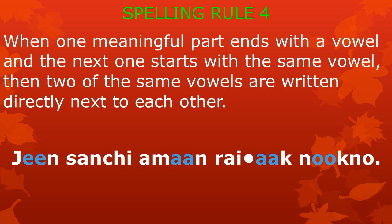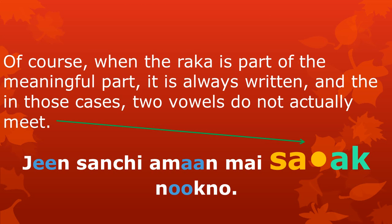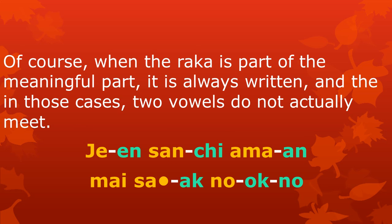The fourth spelling rule is this: when one meaningful part ends with a vowel and the next one starts with the same vowel, then two of the same vowels are written directly next to each other. We can analyse the words in a sentence with the dll shown in gold colour and the sok in green colour. Of course, when the raqa is part of the meaningful part, it is always written, and in those cases the two vowels do not actually meet — for example, in the word sa'aq. In the analysis, we can see that the raqa is part of the ca'dil of the word sa'aq.